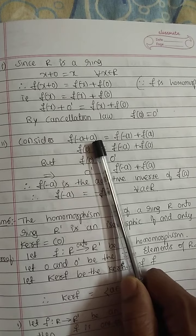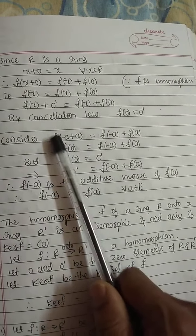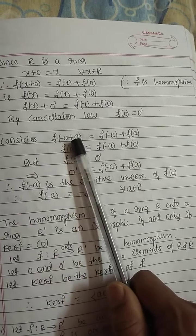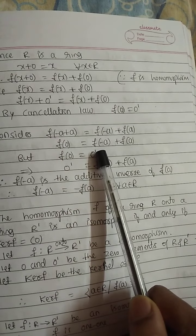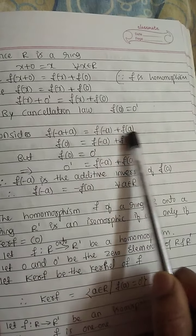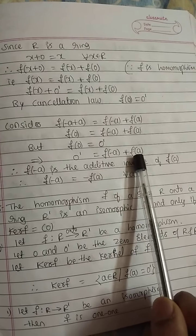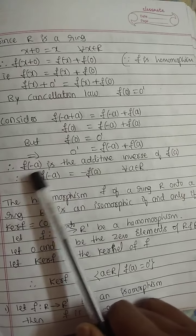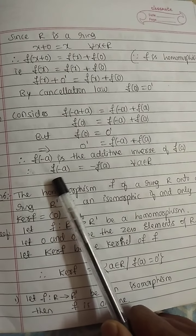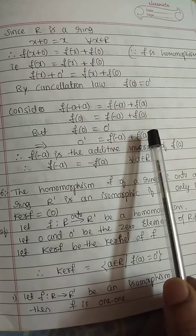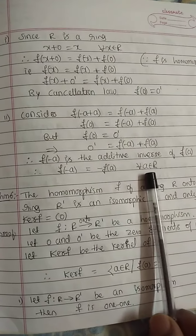Second: Consider F(minus A plus A). By the definition of homomorphism, this equals F(minus A) plus F(A). Now F(minus A plus A) equals F(0), and we know that F(0) equals 0'. Therefore 0' equals F(minus A) plus F(A). Hence F(minus A) is the additive inverse of F(A), because their sum gives the zero element 0'. Therefore F(minus A) equals minus F(A) for every A belonging to R.